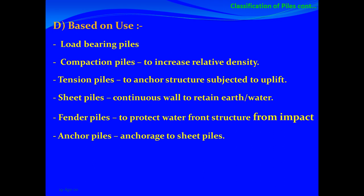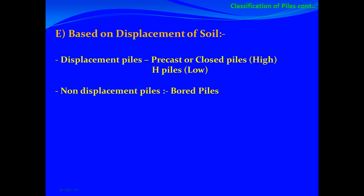The fifth criterion is based on displacement of the pile. Displacement piles may be precast or closed-end pipes, classified as high displacement piles, or H-piles and I-sections referred to as low displacement piles. In both cases the adjoining soil is displaced, causing densification. Non-displacement piles — bored piles — are drilled holes filled with concrete that do not cause displacement of the adjoining material. This completes the classification of piles.